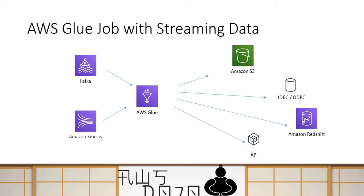It is quite important and significant that Glue now supports streaming data, because now you can do PySpark-based, Spark-based analysis and transformation on streaming data. Simply said, it can source data from Kinesis and Kafka — when you start the Glue job it always runs, keeps looking for data, and when data comes it processes it and uploads to the destination.